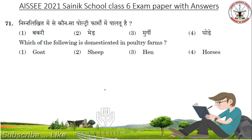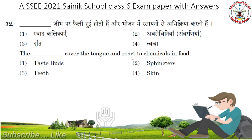Which of the following is domesticated in poultry farms? Options: Goat, Sheep, Hen, Horses. The answer is Hen. The dash covers the tongue and reacts to chemicals in food. Options: Taste buds, pinchers, teeth, skin. Answer: Taste buds.